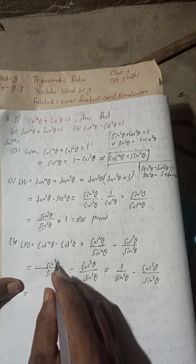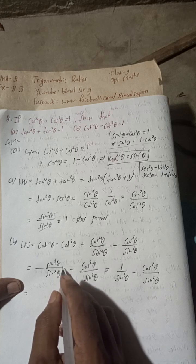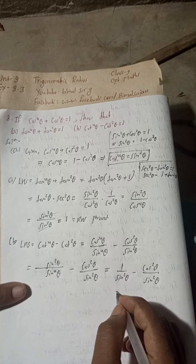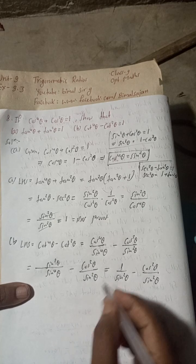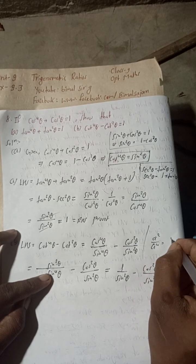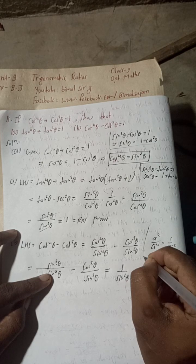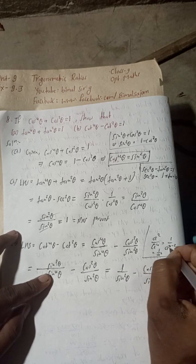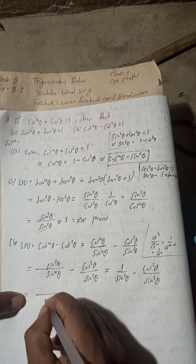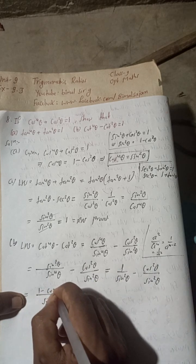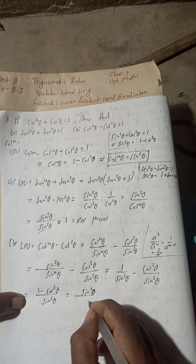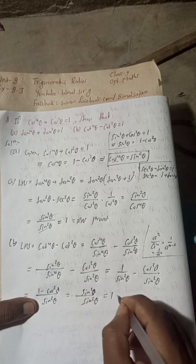Since the denominators are the same (sin²θ), this becomes (1 - cos²θ)/sin²θ. Now 1 - cos²θ = sin²θ, so this equals sin²θ/sin²θ. Both cancel and we get 1, which equals RHS. Proved. This completes the solution for part (b).